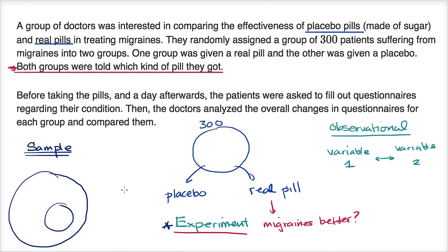Now the next question is, was this experiment conducted well? Even when I read it, I was bothered by the fact that both groups were told which kind of pill they got. That completely defeats the purpose of a placebo. The placebo effect is: I think I'm taking something good for me, and it's been documented that when you think you're taking a pill that helps you, it oftentimes does help you. So if someone's coming up with a new medicine, it better be more effective than just the placebo. This is a very bad study — to tell both groups what kind of pill they got. You actually should tell neither group which type of pill they got.